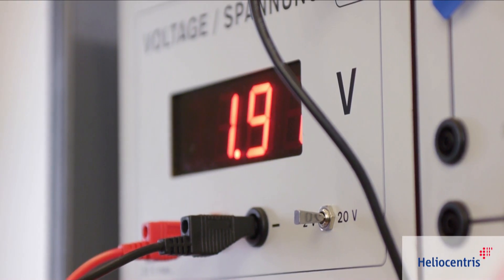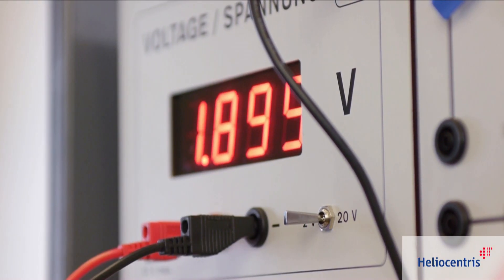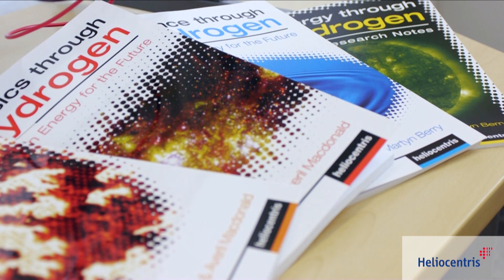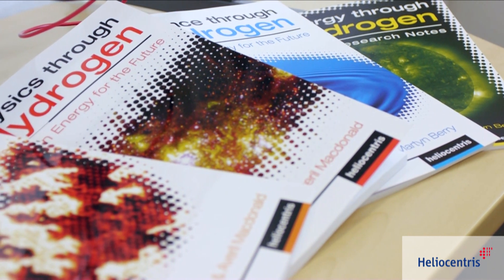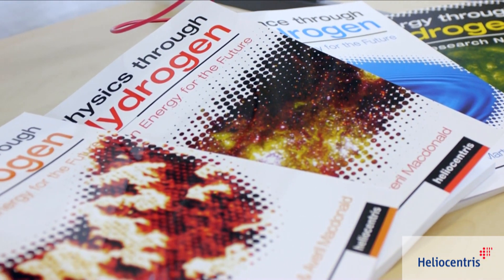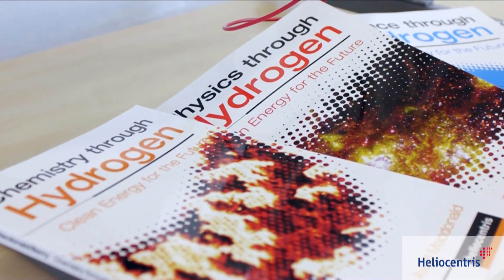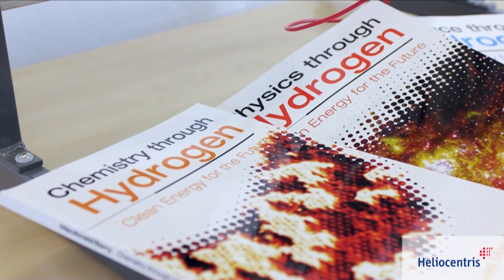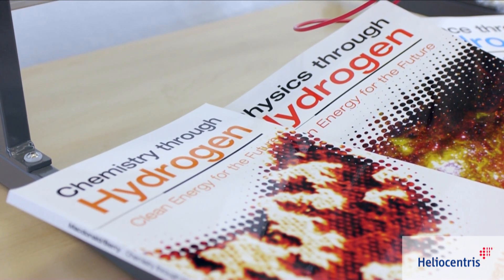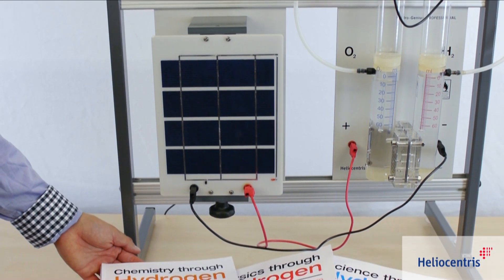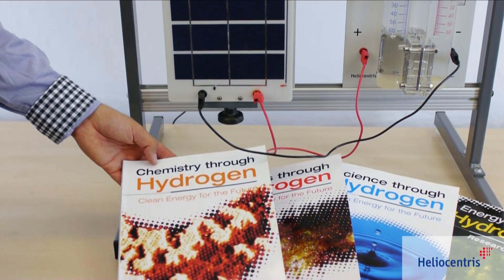In addition, analog data output enables further processing of the recorded data. The included four-volume instruction material contains more than 20 pre-configured experiments and technical background information on hydrogen and electrolysis suitable for content from the curricula of physics and chemistry of secondary schools.